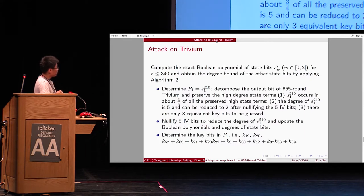So, we compute the internal state bits when r is no bigger than 340, using the IV bits and k bits. And obtain the degree bounds of other state bits by algorithm 2. The other state bits are around higher than this. So, we choose p1 is s1_210, and decompose the output bits of 855. Trivium map preserves the high degree state terms.